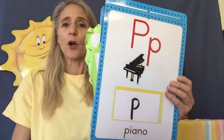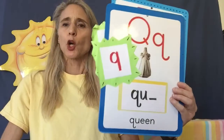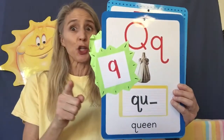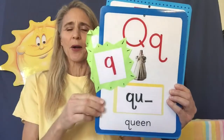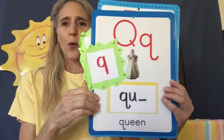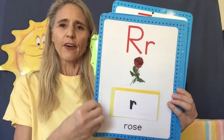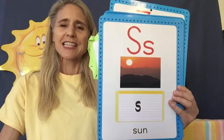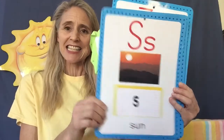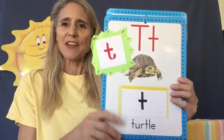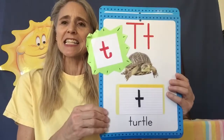Piano card P — p, p, p. Queen card Q — qu, qu, qu. You remembered! Rose card R — r, r, r. Sun card S — s, s, s. Turtle card T — fancy T — t, t, t.